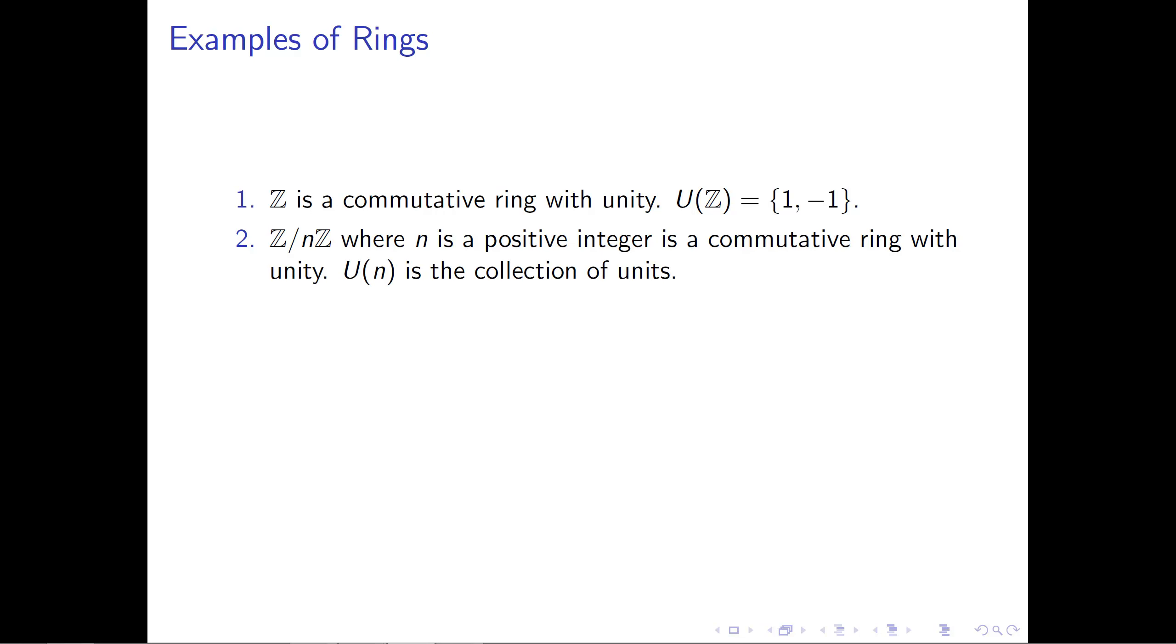Now, our second example of a ring, very similar to our first example, is the integers mod n, where n is a positive integer. This is also going to be a commutative ring. Basically it's commutative, because multiplication is commutative, if it's done modularly or not. And there's a unity here as well. And U(n) here is the collection of units, but U(n) varies based on what you've chosen your n to be in this example.